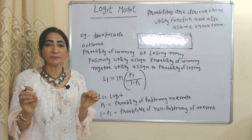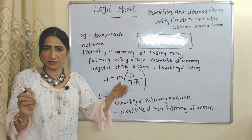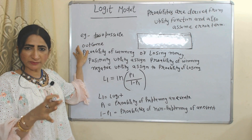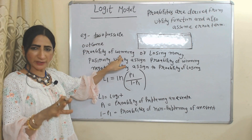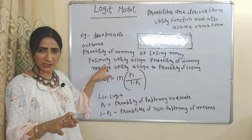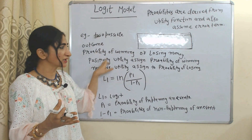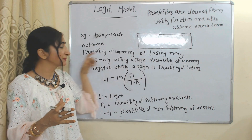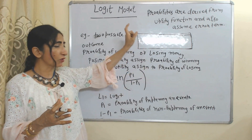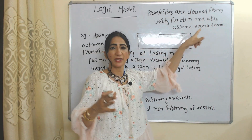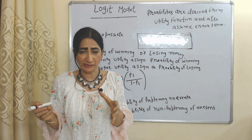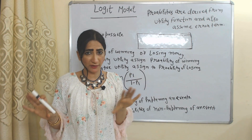The logit model predicts probability of choosing an alternative through a utility function. For example, there are two possible outcomes: probability of winning money or probability of losing money. We assign positive utility to the probability of winning money and negative utility to the probability of losing money. We also include an error term, because we cannot measure all factors — there are some unobserved factors as well.